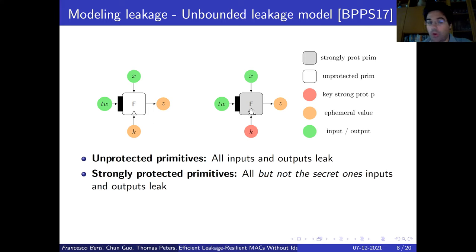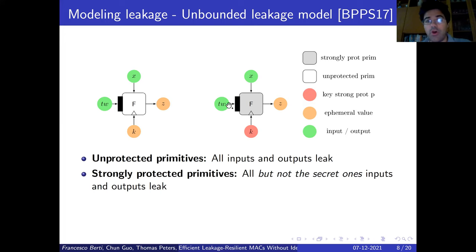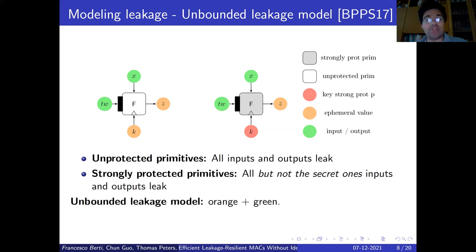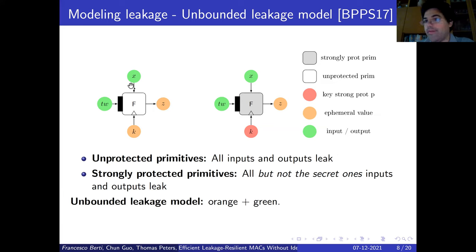We use the red color to denote the key of strongly protected primitives. This gives a nice pictorial view for the unbounded leakage model, because the adversary sees as leakage the green values. In reality, what she knows is all the green values and all the orange values — the orange being what is given by leakage. This is very strong.